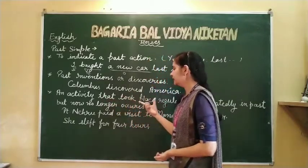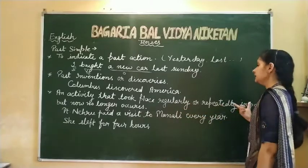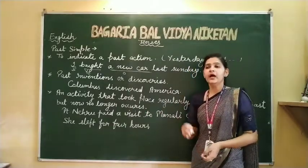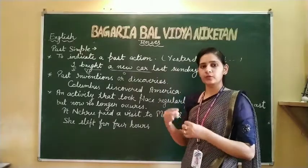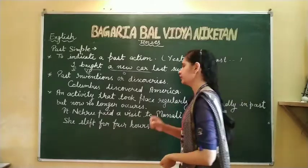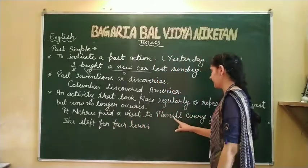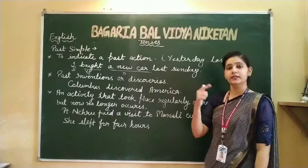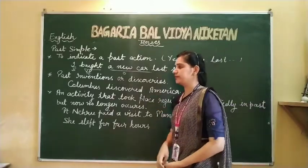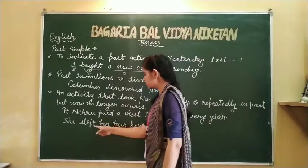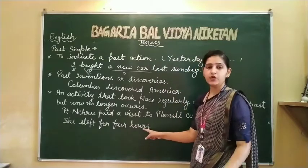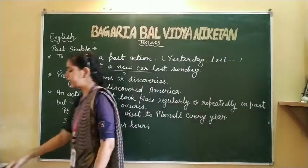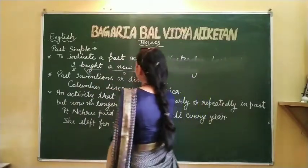Third situation: an activity that took place regularly or repeatedly in the past but now no longer occurs. For such repeated past actions we use past simple. For example, Pandit Nehru paid a visit to Manali every year — यानि repeated action था हर साल का। Another example: She slept for four hours — वो चार घंटे सोई, but now she is not sleeping. इस तरीके की past action दिखाने के लिए भी हम past simple का use करते हैं।